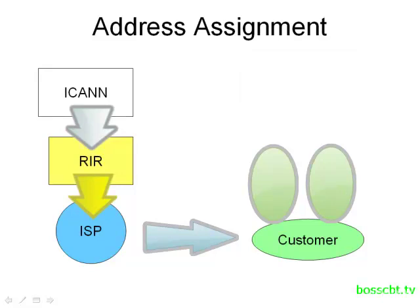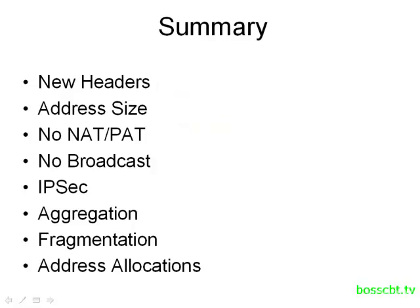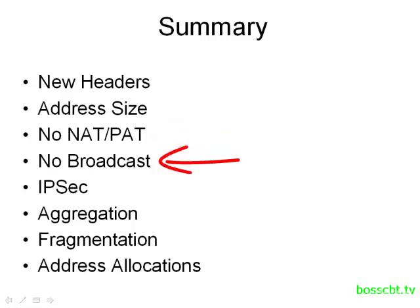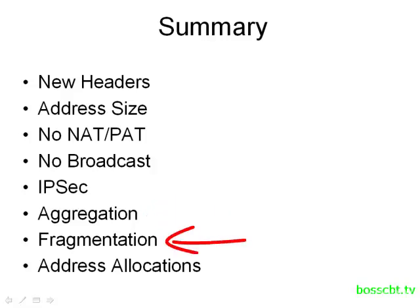There's also a way a customer can appeal directly to ARIN to get their own IP addresses. To summarize: with IPv6 we get new headers — that's really why IPv6 is not interoperable with IPv4 — and those headers are smaller and customizable. Another big difference is the address size. We no longer have to use NAT and PAT, and we no longer have to support the broadcast address. IPv6 is tightly integrated with IPsec, and hosts using IPv6 must be able to support it. We get better aggregation capabilities leading to more efficient routing, and fragmentation no longer exists with IPv6.